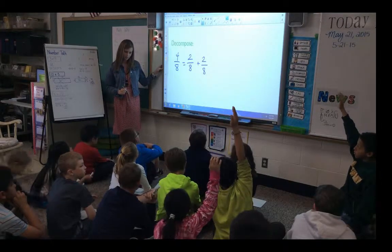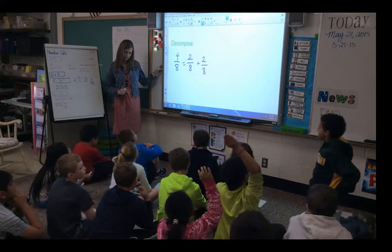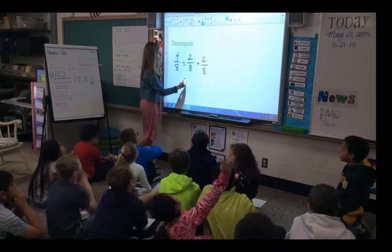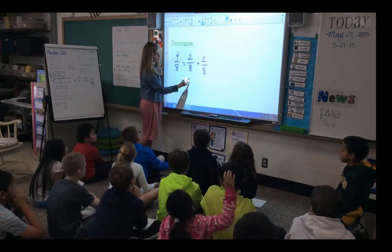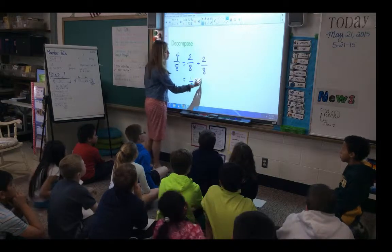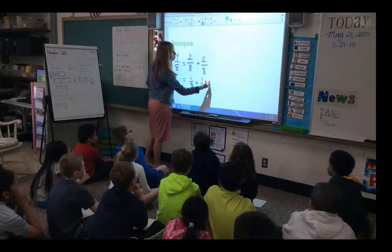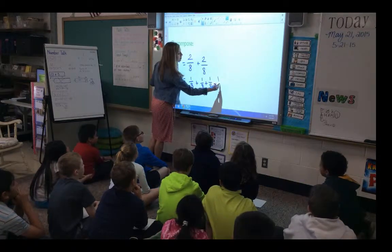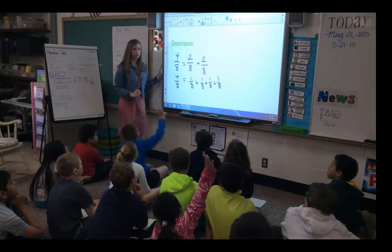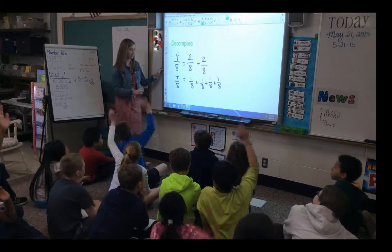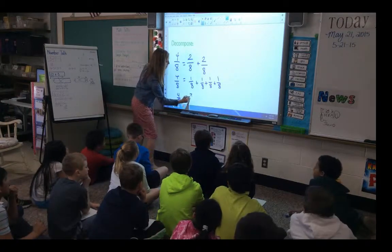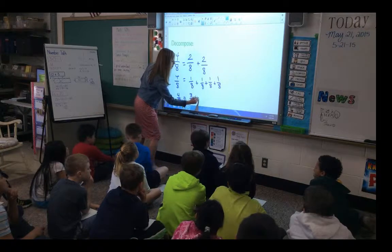Hunter, what do you think? Break it into one-eighths. How would I do that? Let's count with Hunter: one-eighth plus one-eighth plus one-eighth plus one-eighth equals four-eighths. Is there another way, Nitra? Four-eighths is three-eighths plus one-eighth.